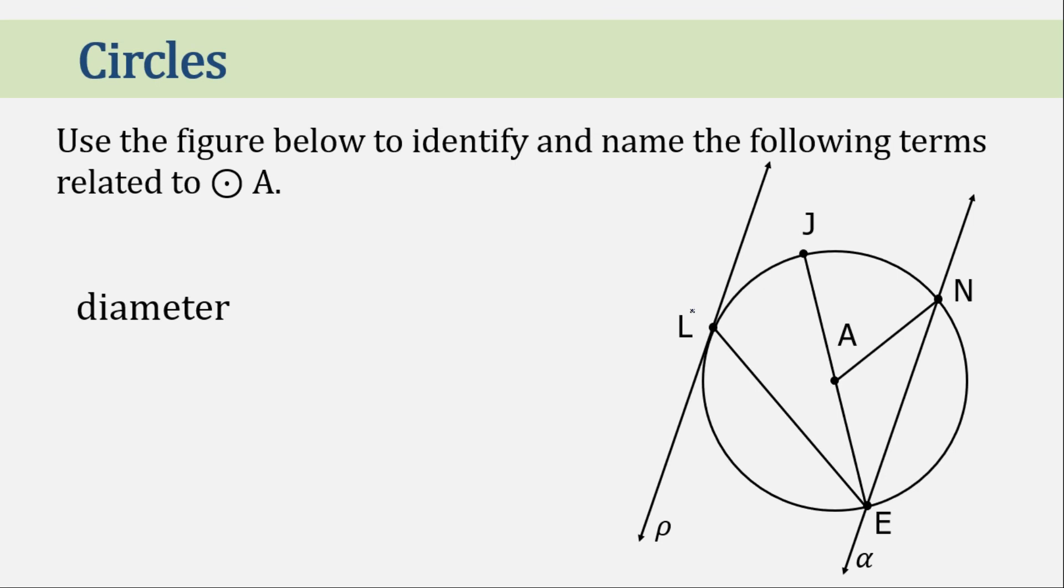Now, diameter. We only have one diameter. That is JE. For the chords, we can see three of it. LE or EL. JE. Again, all diameters are chords. JE or EJ. And next is NE or EN. So these are the chords in this illustration.